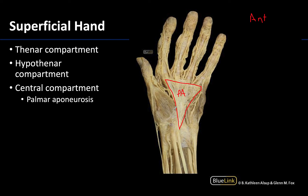The palmar aponeurosis also helps split up the eminences, those moundings of muscles. There is a larger and more lateral thenar eminence and a smaller and more medial hypothenar eminence. The thenar eminence is associated with the first digit — the thumb — so it is lateral. The intrinsic muscles of the thenar eminence move the joints of the first digit, whereas the hypothenar compartment is associated with the fifth digit, the little finger, and moves joints associated with the fifth digit.